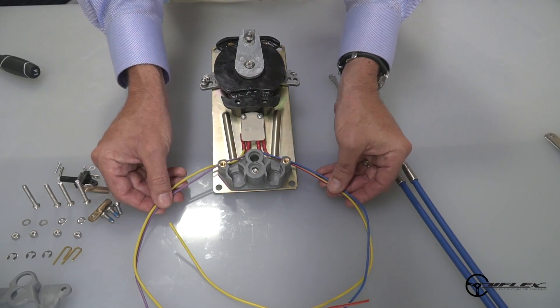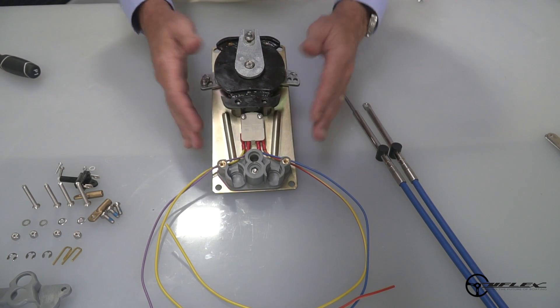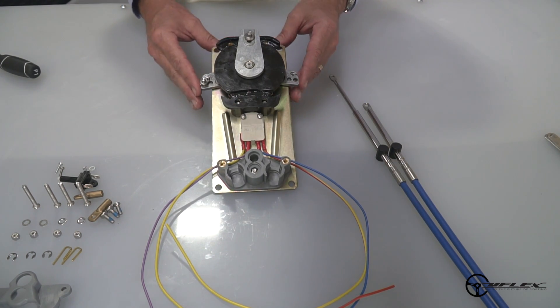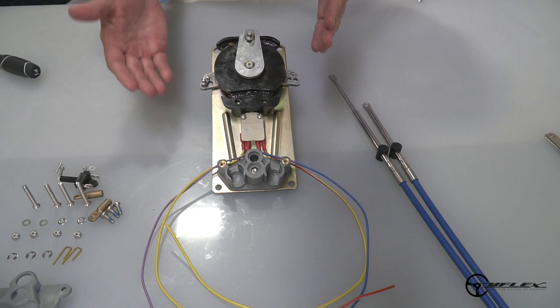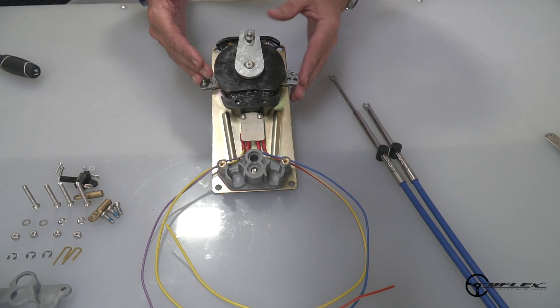Now that we've got the neutral safety switch properly installed on the control, the next step is to determine whether or not the boat is push for throttle or pull for throttle.